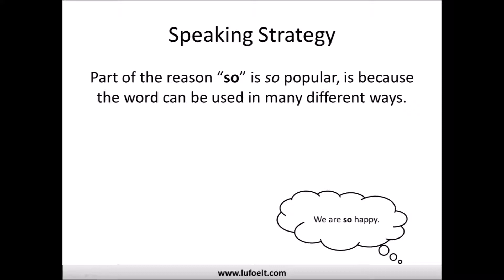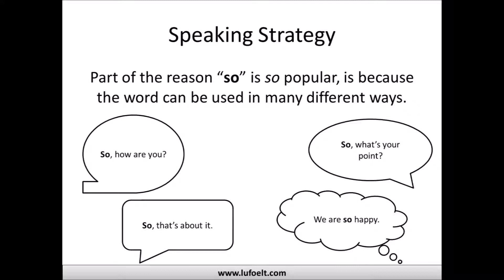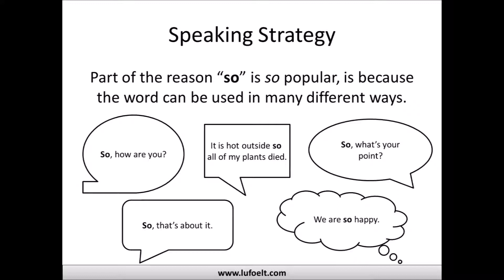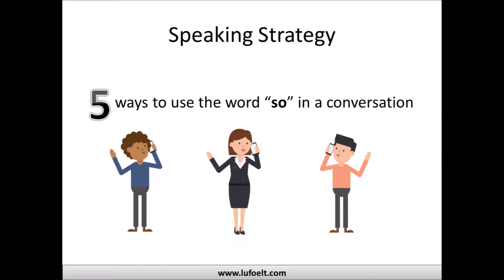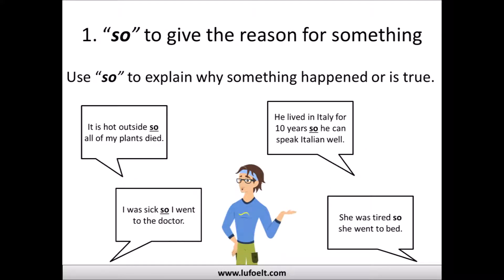Here are a few examples on the screen: 'We are so happy,' 'So that's about it,' 'So what's your point,' 'So how are you,' and 'It is hot outside so all of my plants died.' These are five different examples of the way 'so' can be used in conversation. Today's lesson covers five ways to use the word 'so,' and there's a quiz at the end.